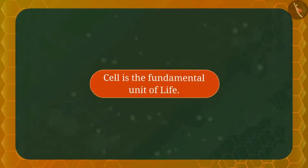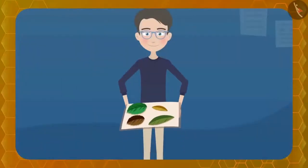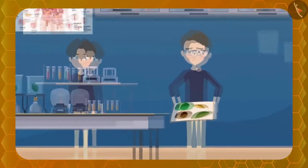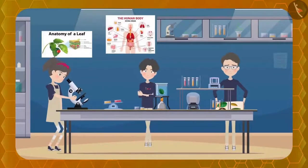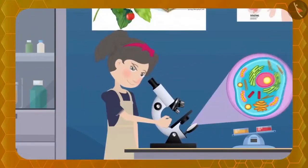Cell is the fundamental unit of life. Can you see them with your naked eyes? No, these cells are so small that they cannot be seen with the naked eye. If you want to see them, you can use a microscope, which you can find in your school biology laboratory.